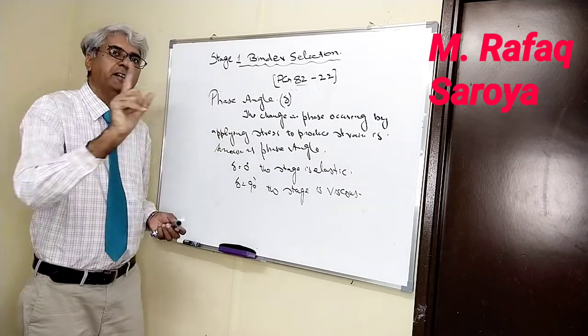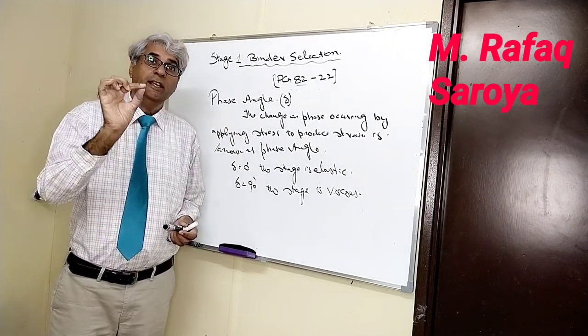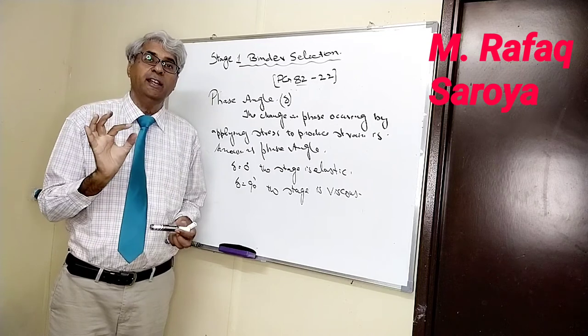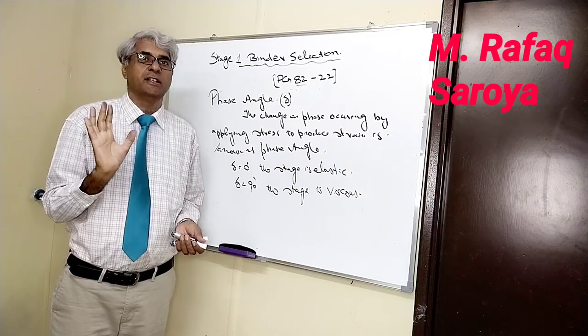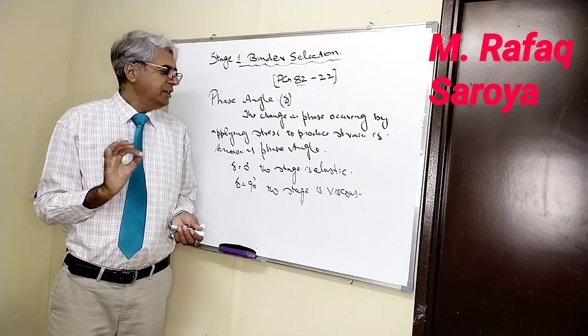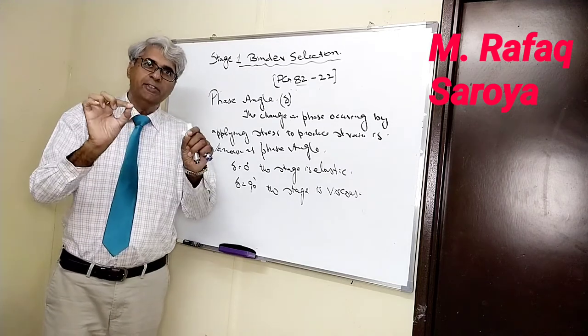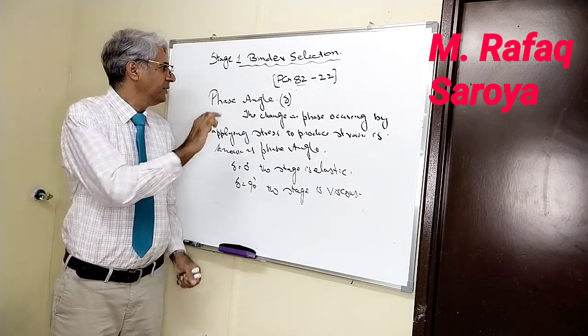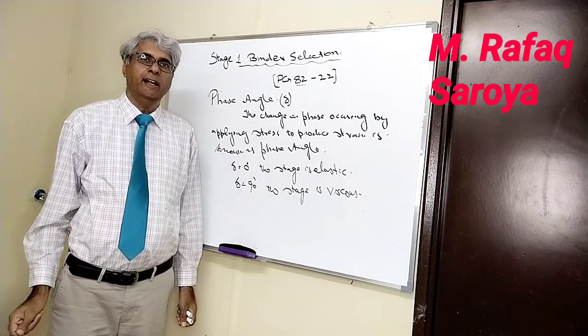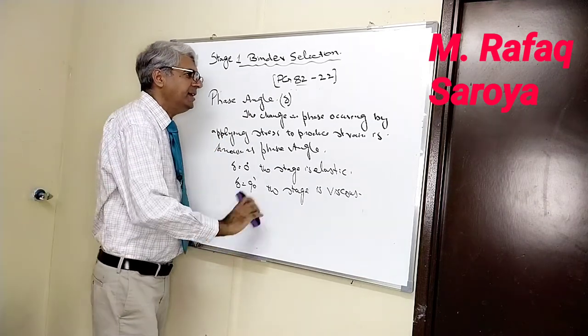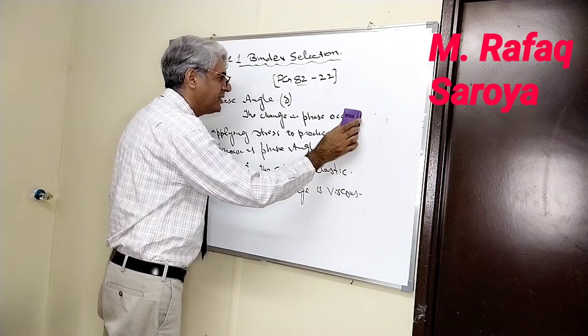In between 0 and 90 degree, in between 0 and 90 degree, it is known as viscoelastic. Now we have studied the two definitions over here: one is a phase angle and other is a complex shear modulus. Let me tell you what is the relationship of these two.